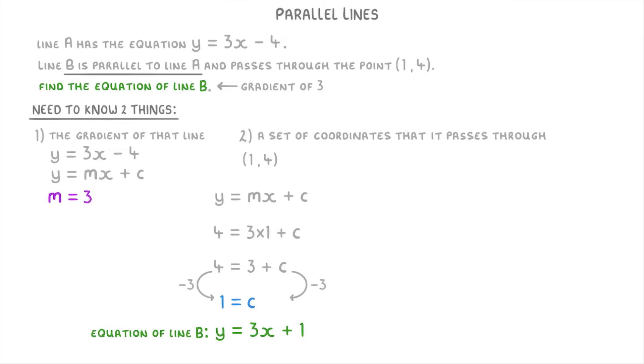So basically the take home message here is that parallel lines have exactly the same gradient. So if they give you the gradient of one line, you also know the gradient of all of its parallel lines.